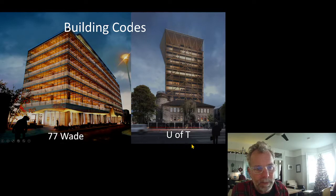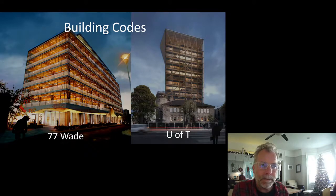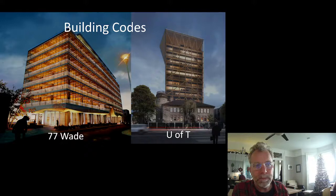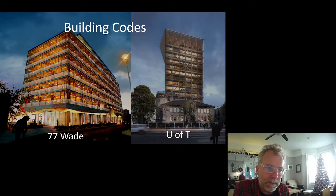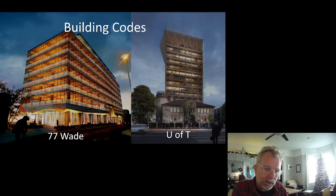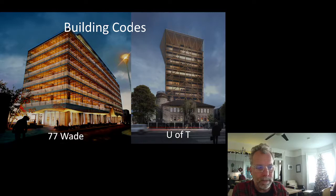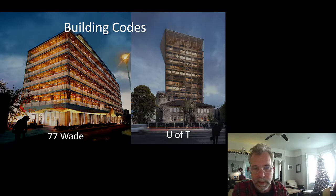The academic wood tower at U of T — the alternative solution has been submitted, and I believe the fire alternative solution has been approved. We haven't received the structural alternative solution approval yet. This is also a largely exposed mass timber building, where the mass timber is not concealed for fire protection but for acoustic mitigation elements. We're also early days on a 30-story residential building and a 20-story office building, where the owner is comfortable proceeding even well beyond the prescriptive limits of the building code.